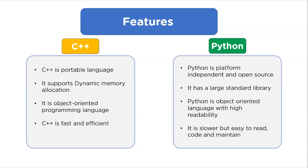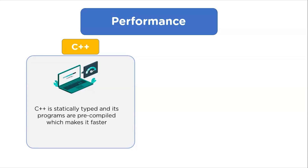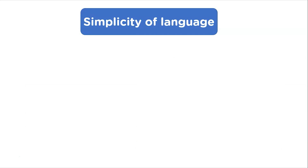Now let's look at the major differences. In terms of performance: C++ is statically typed, meaning variable types are known at compile time, and its programs are pre-compiled, making it faster than Python. On the other hand, Python is a dynamic language and is interpreted — lines of code are converted to executable code at runtime, which consumes some additional time.